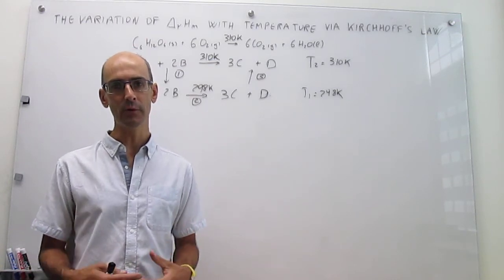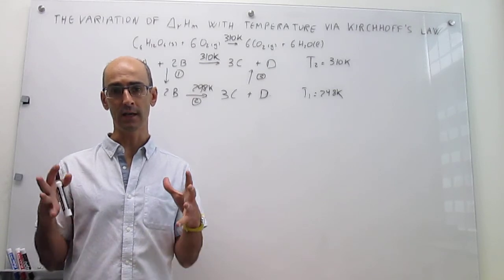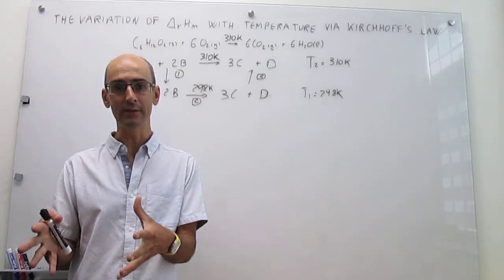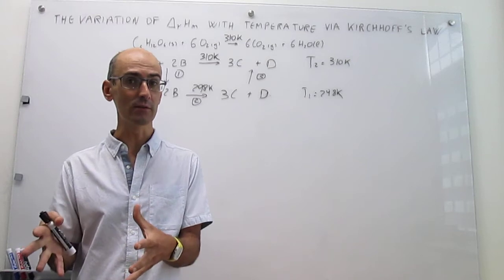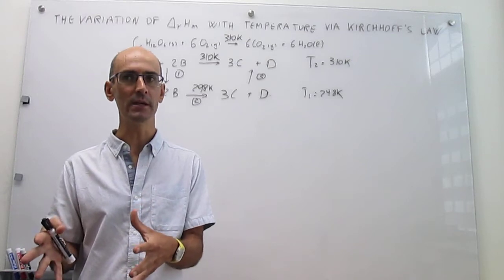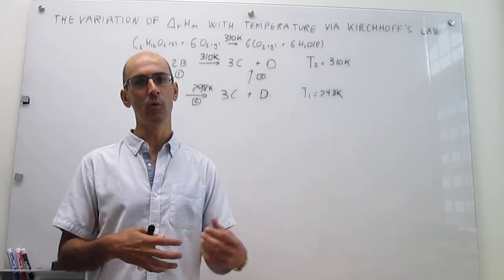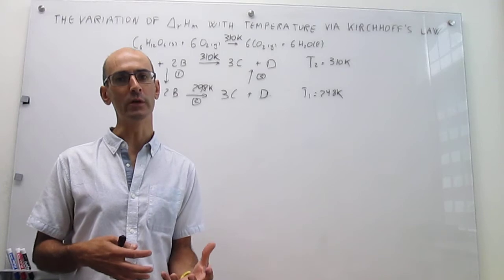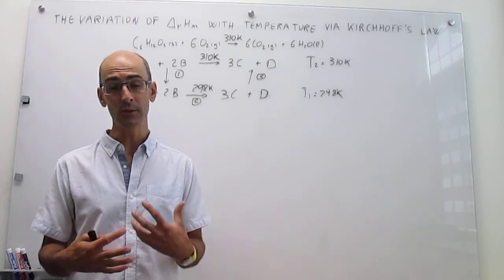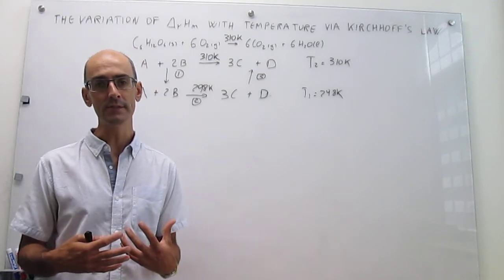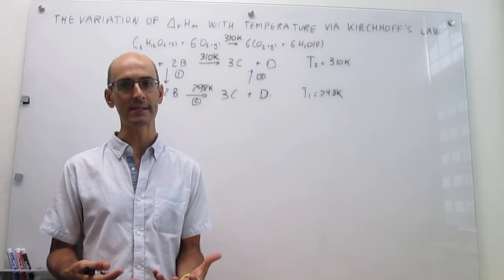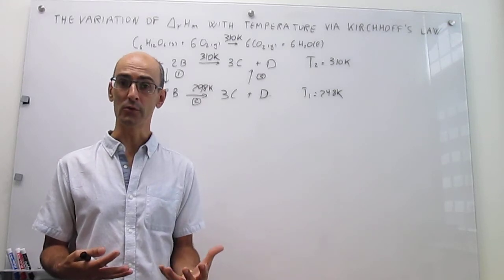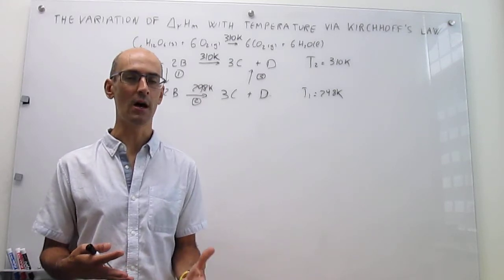There are a couple of ways to take that enthalpy of the reaction at 298 Kelvin — which you can calculate directly from tables — and then determine what the enthalpy would be if you were to change the temperature. In the last video, we saw how to do that using a thermodynamic cycle. In this video, we're going to learn how to do that using Kirchhoff's law.